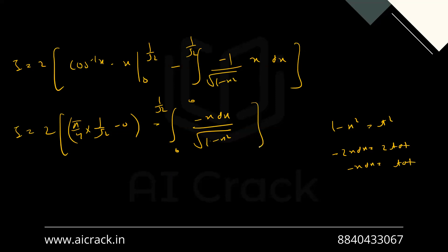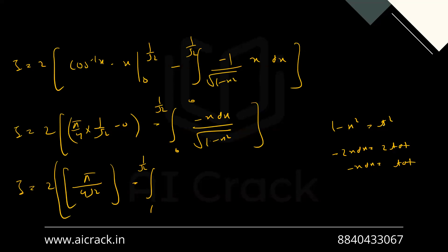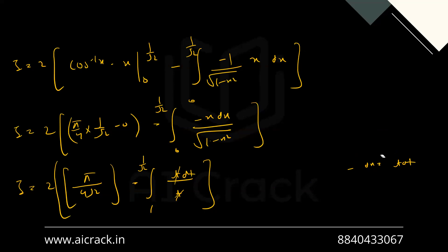So what we have got: i equals 2 times 2 times — this becomes π/(4√2) — minus the integral from 1 to 1/√2, because when x = 0, t becomes 1, and when x = 1/√2, t becomes 1/√2. So this becomes integral from 1 to 1/√2 of t dt over t. It's actually |t|, but since we are positive in this range we can remove the modulus. So t cancels, and ultimately i equals 2 times (π/(4√2) minus (1/√2 minus 1)).